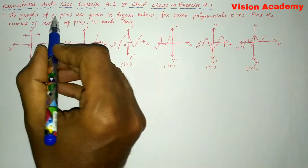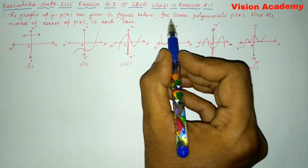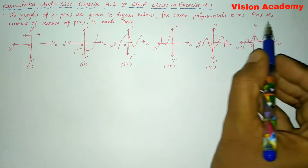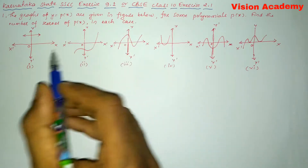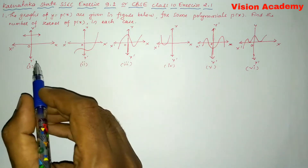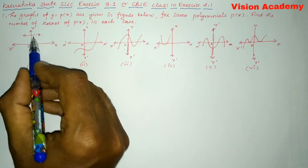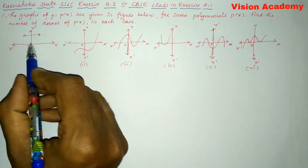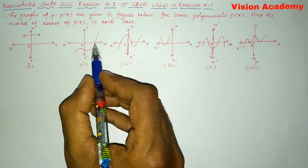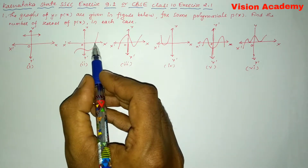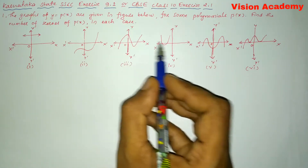Question number 1. The graph of y is equal to p of x are given in the figure below, for some polynomials p of x. Find the number of zeros of p of x in each case. Here they have given total 6 graphs. The number of zeros is nothing but how many times the graph is intersecting on the x-axis — whether at one, two, three points, and so on.